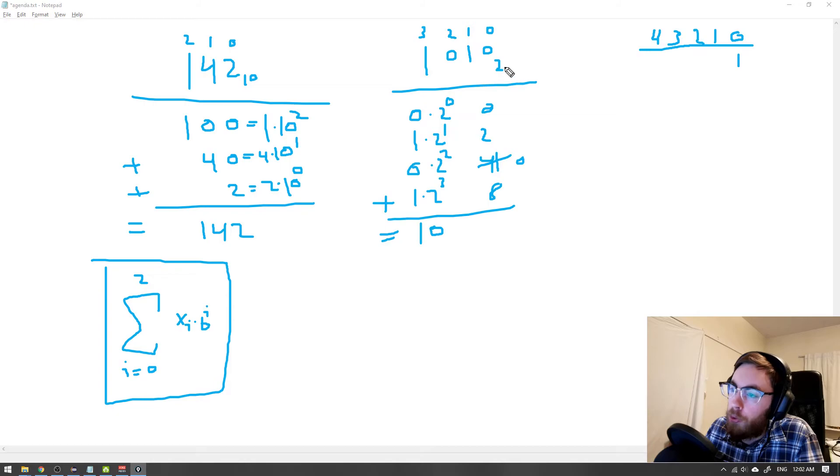And if you go to the second place and you have a 1 here, that would represent 2 to the power of 1, which is 2. And in the next position, 2 to the power of 2 is 4. And then here, 1 times 2 to the power of 3 is 8.